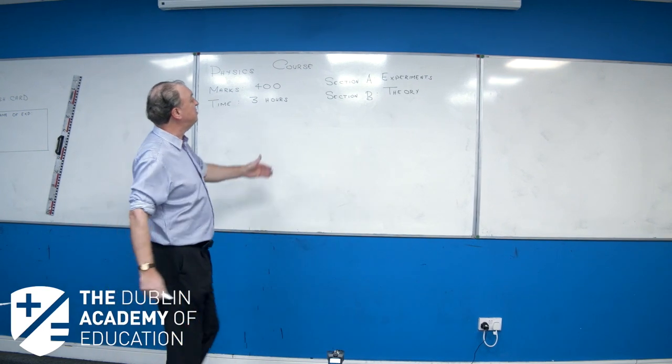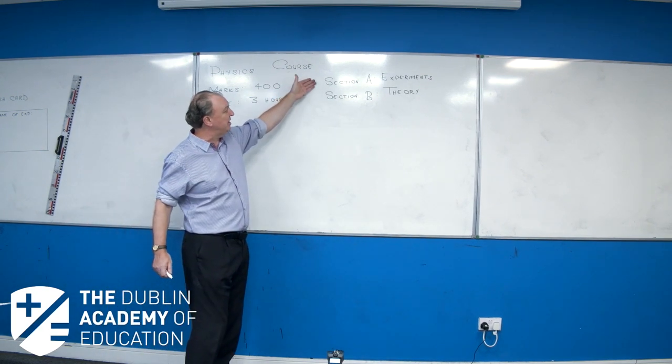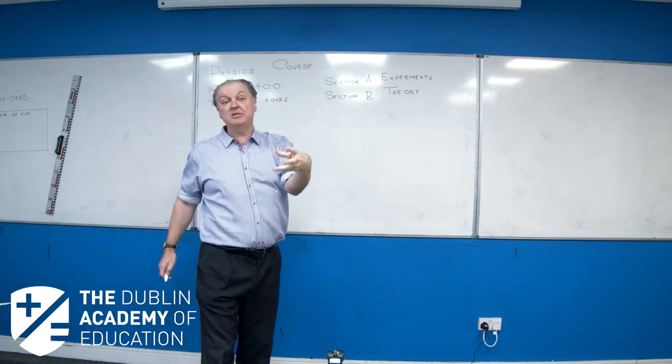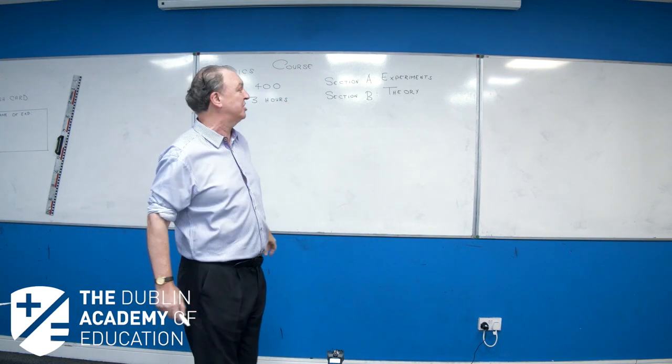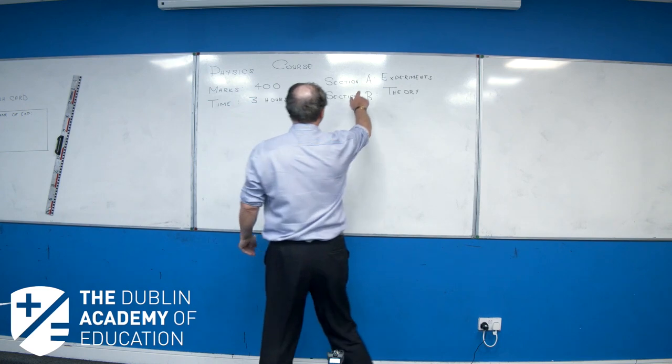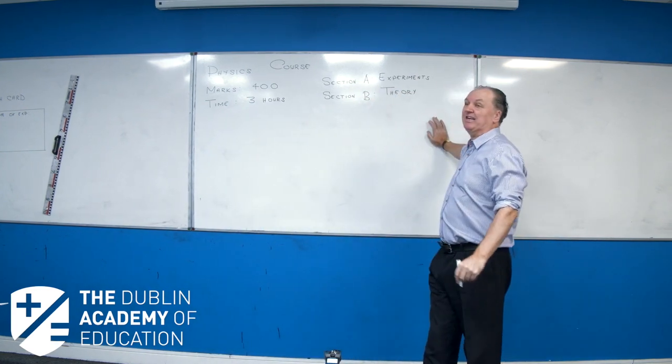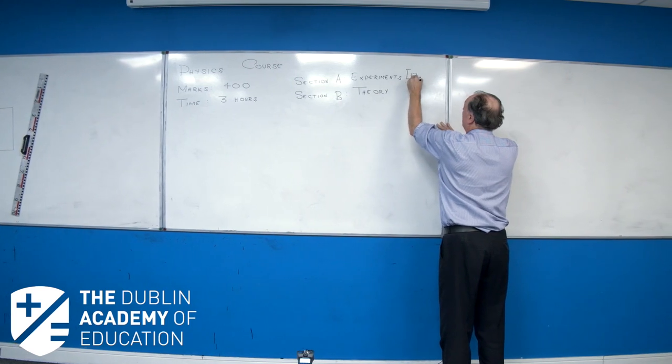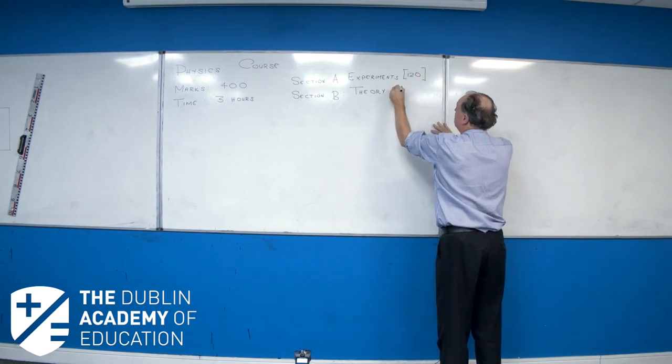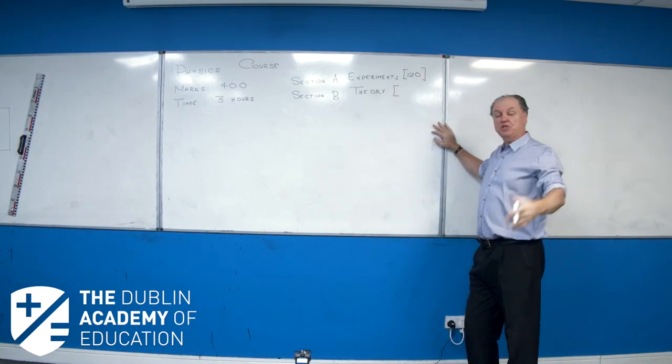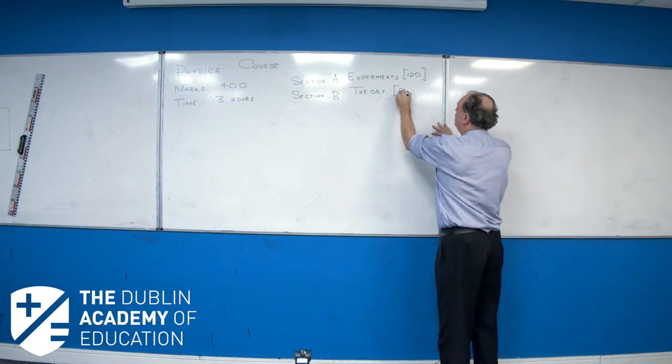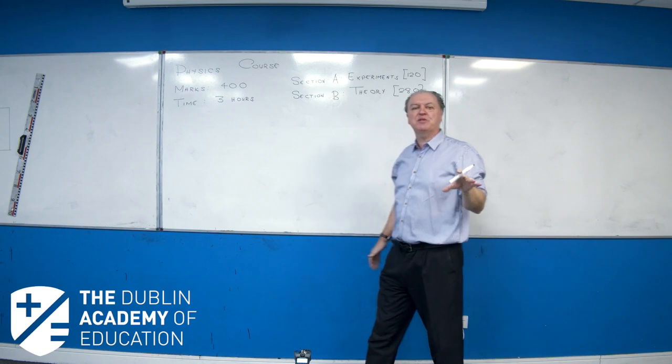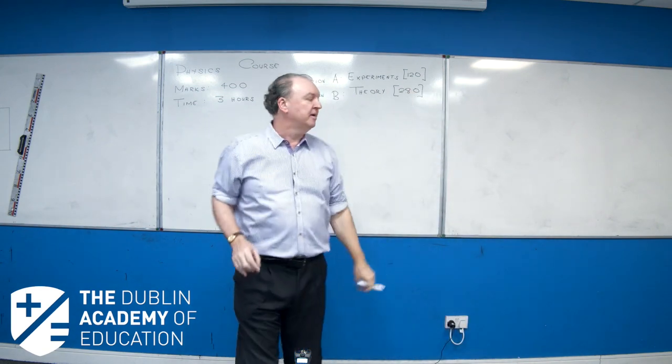Well, there are two sections. You've got Section A and you've got Section B. In this particular lesson, I'm going to talk about Section A. Section A is the experimental section. And there are 120 marks for that. The theory section, Section B, we've got 280 marks.